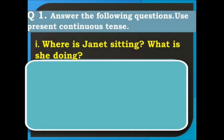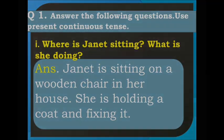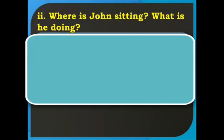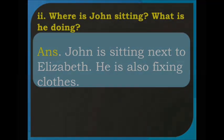This picture is about a family working together and helping each other in fixing clothes. There are some questions about the picture and we have to answer them using present continuous tense. Question 1: Where is Janet sitting? Answer: Janet is sitting on a wooden chair in her house. She is holding a coat and fixing it. Question 2: Where is John sitting and what is he doing? Answer: John is sitting next to Elizabeth. He is also fixing clothes.